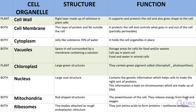Here is a chart with all of the cell organelles, their structure, and their functions. Starting with the cell wall — shaded green, so it is present only in plant cells. The cell wall is a rigid layer made up of cellulose in plant cells. Its function is that it provides support and protection to the cell and also gives it its shape, which is why the plant cell has a very structured, specific shape.